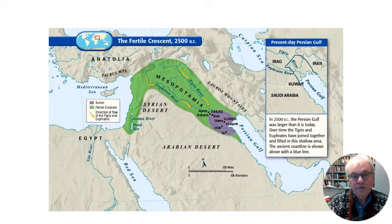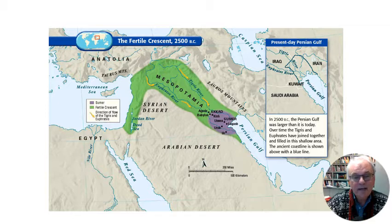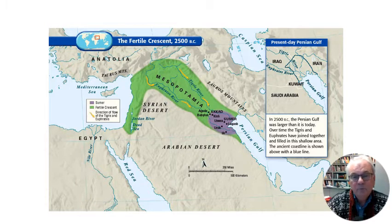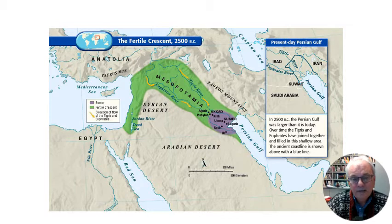We'll see how the land itself contributed to the story, sort of as an extra actor that helped shape the story of the Bible. This first slide shows a common picture of the Fertile Crescent, where civilization first began, along with Egypt, at least in the west. It's known as the Fertile Crescent because you have the waters of the Tigris and Euphrates, and the area where rain fell, crops were grown, and animals could be found.